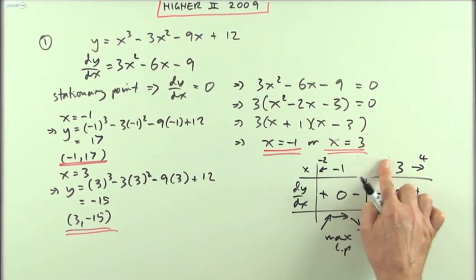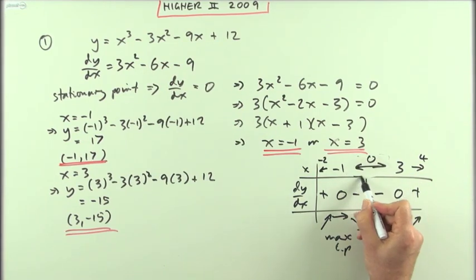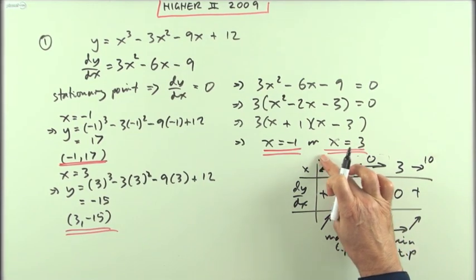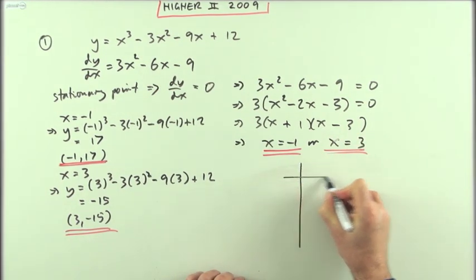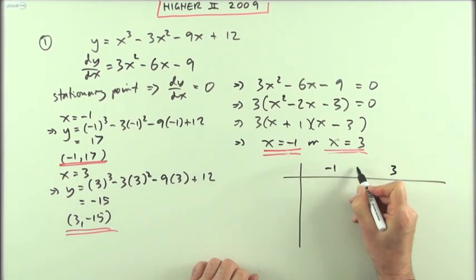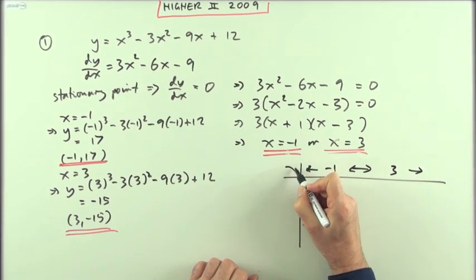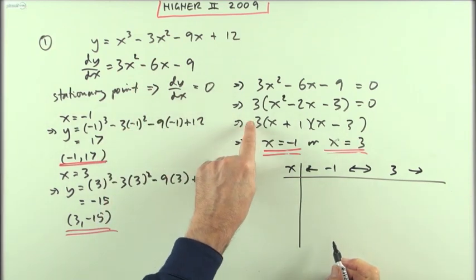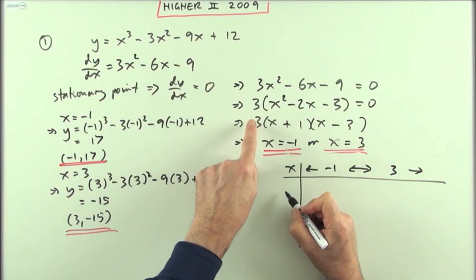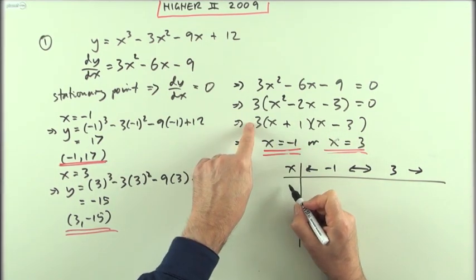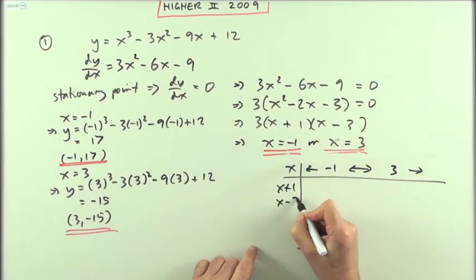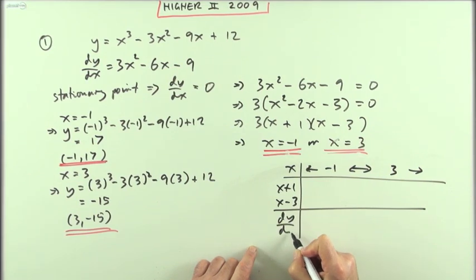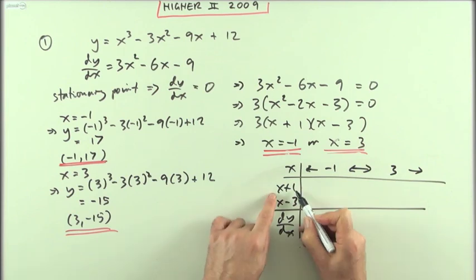It doesn't matter which numbers you chose — you could have done it that way, or chosen one number in between, or used something easy like 10 or −10. Alternatively, you can make up a table of signs: something happened at −1, something happened at 3 — what happened before, between, and after? Instead of evaluating in one go, put down the factorization. The three is not going to change the sign. So I've got the factors (x+1) and (x−3).